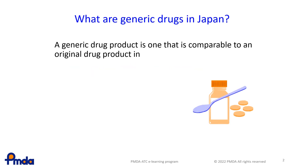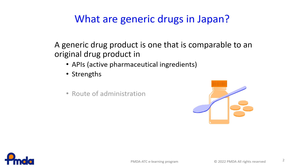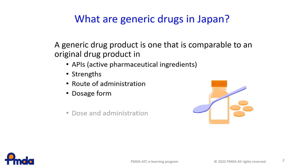A generic drug product is comparable to an original drug product in active pharmaceutical ingredients (APIs), strengths, route of administration, dosage form, dose and administration, and indications. However, generic drugs may have a different colour, shape, or taste from the original drug.